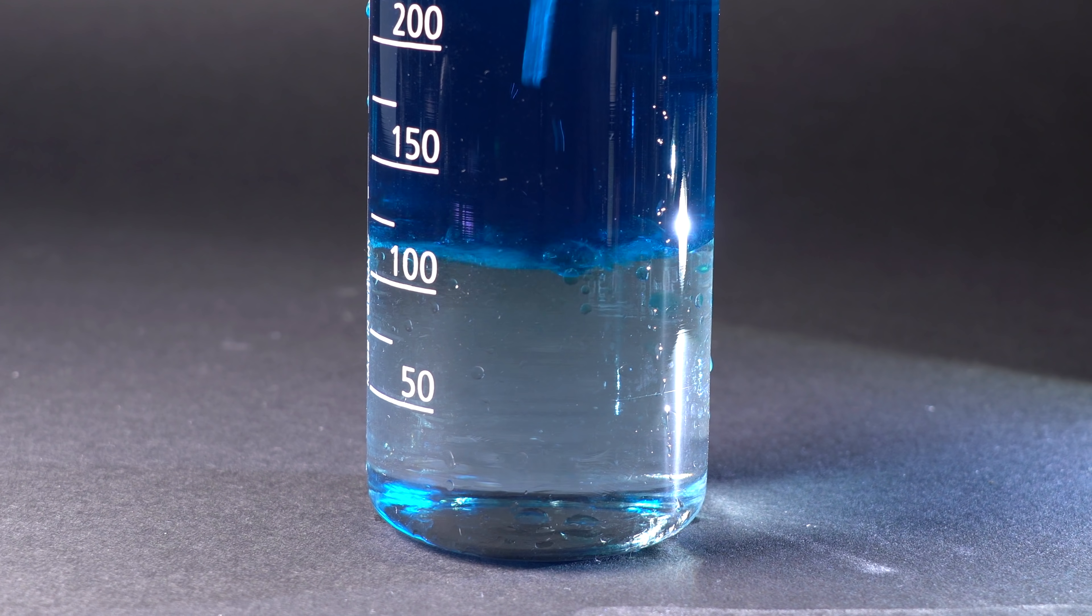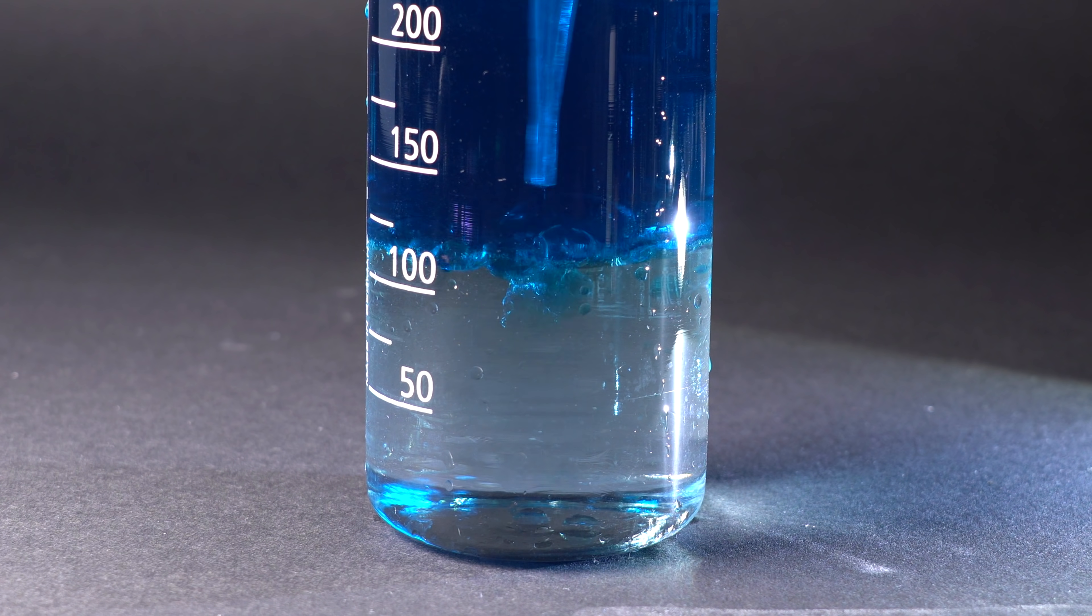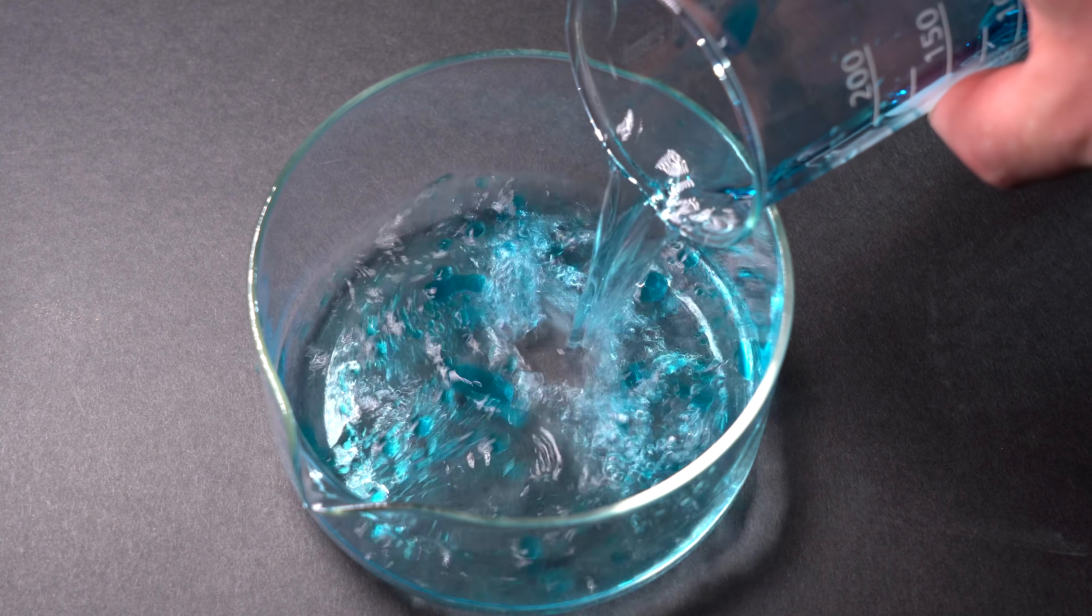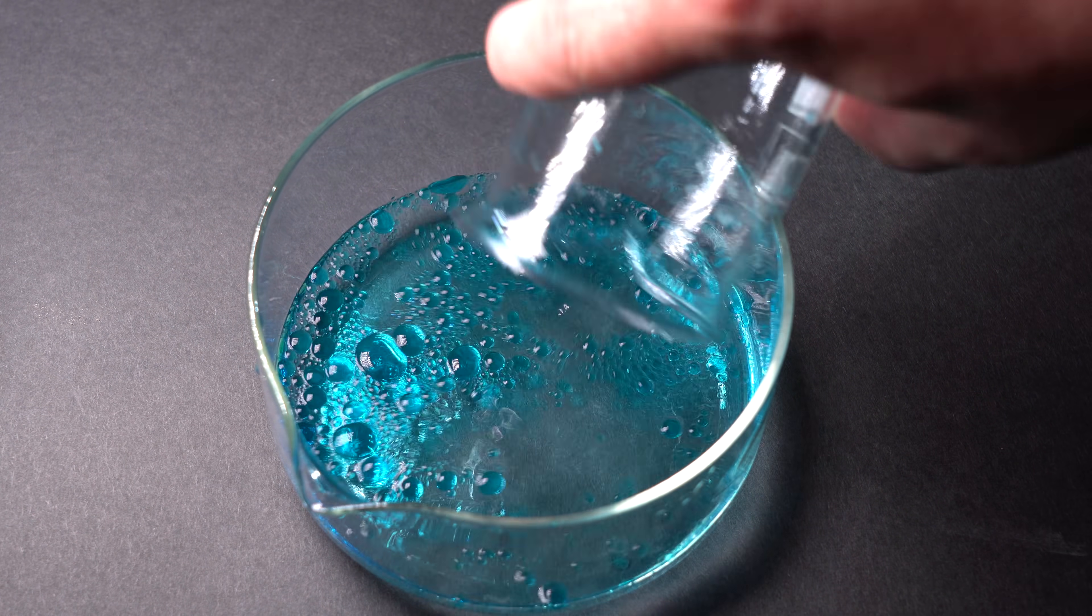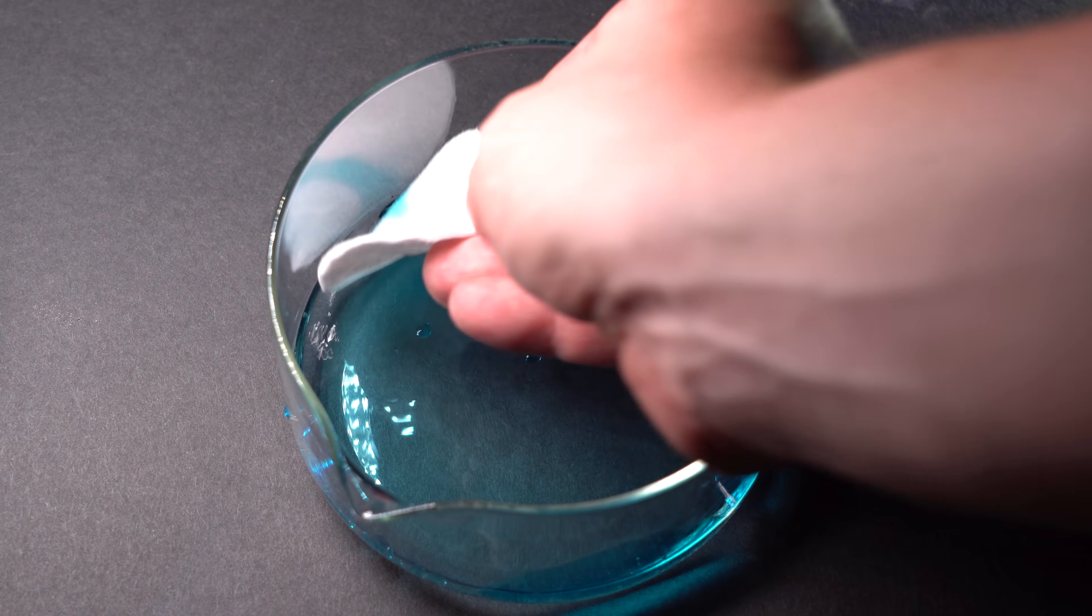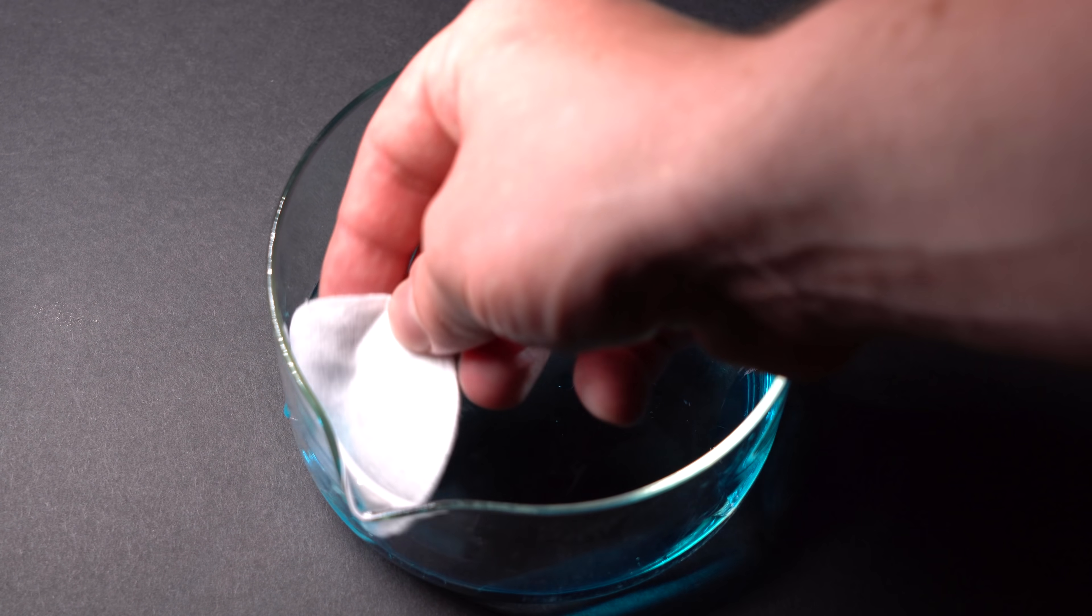However, after stirring for a long time I managed to slightly dye the dry water layer with food coloring. It's very easy to separate these two layers with the help of a syringe and small vestiges of regular water can be mopped by cotton pad.